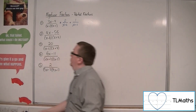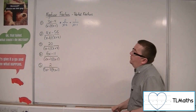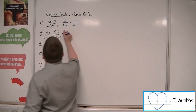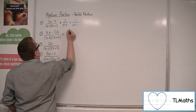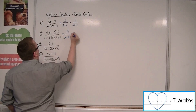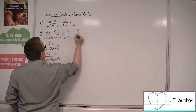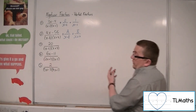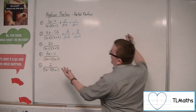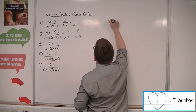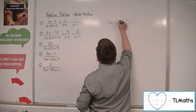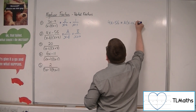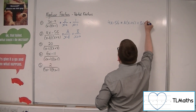Number 2: (4x - 56) over (x - 8)(x + 4). We want to write this as A over (x - 8) plus B over (x + 4). Multiplying both sides by (x - 8)(x + 4), we get: 4x - 56 equals A(x + 4) plus B(x - 8).